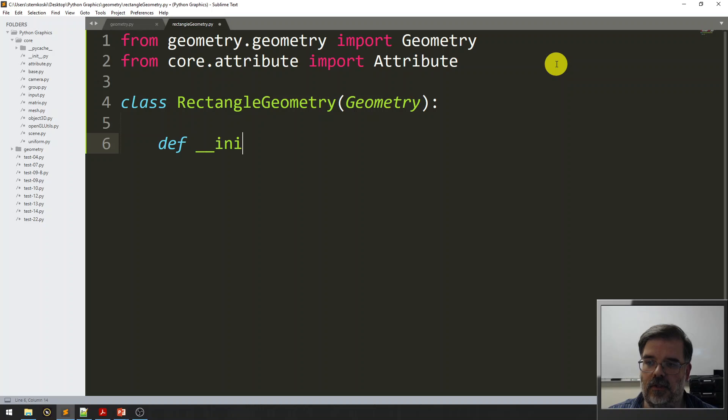And in the constructor, we initialize this. We're going to set the width and height. We'll also give them default values too. We'll say default values of one and one. To start off, I want to initialize that attribute, the attribute dictionary, which is defined in the Geometry class. In the Geometry class, the super class, I need to call that init function right away.